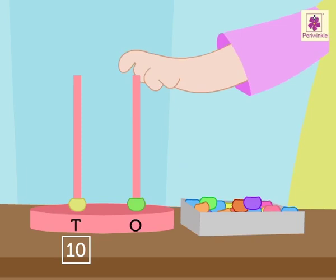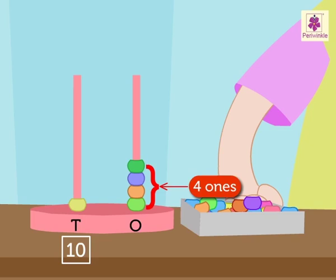Now, put four beads in the ones column which means four ones. Write four in the box below the ones rod.